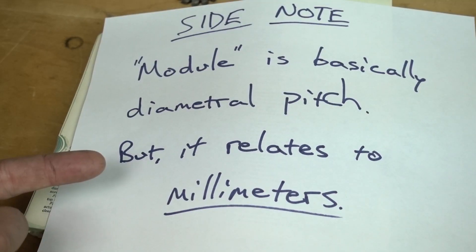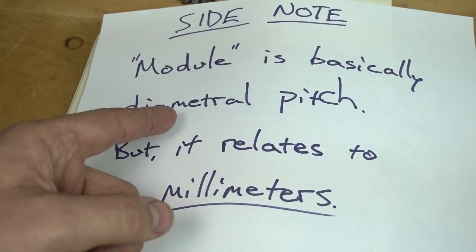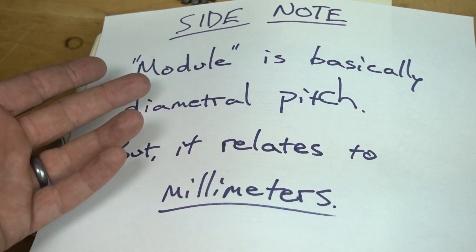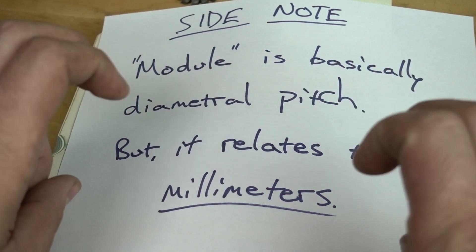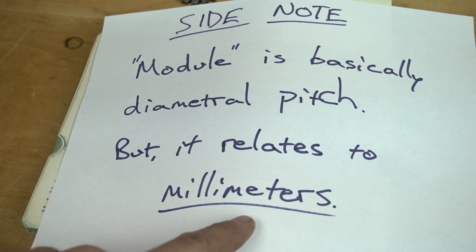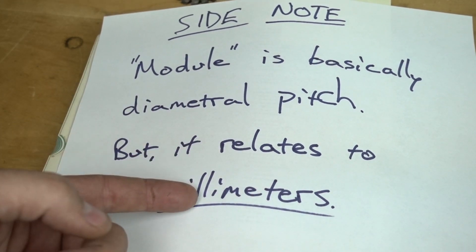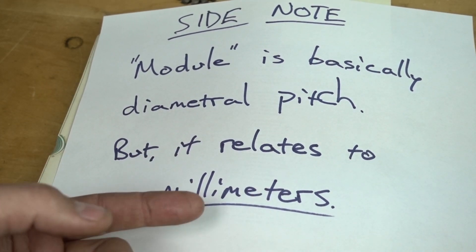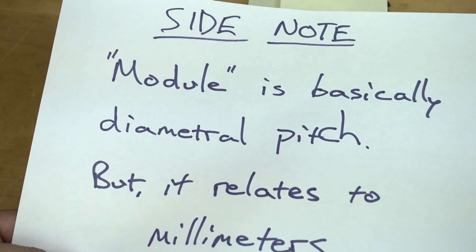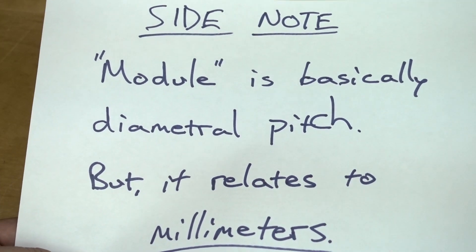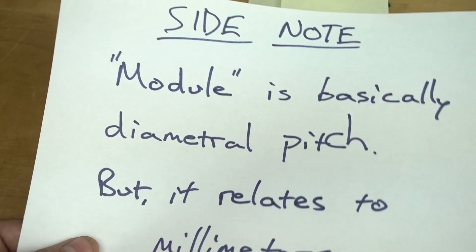Another term that you might hear is module. Module is basically diametral pitch — it's to be understood as the same thing — but the word module relates to millimeters. I'm American, so we're going to get out of module as fast as we possibly can.